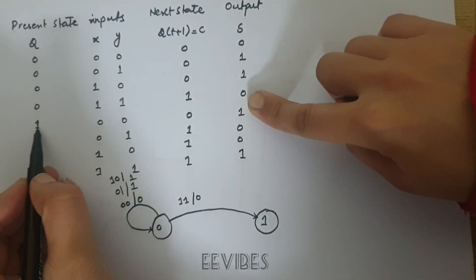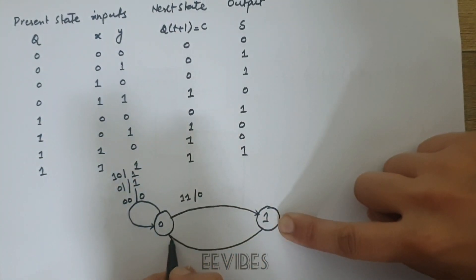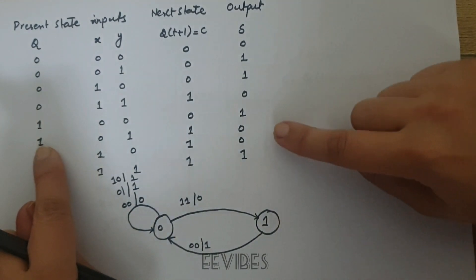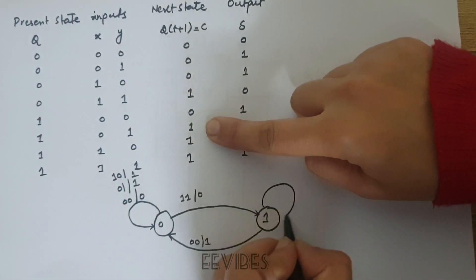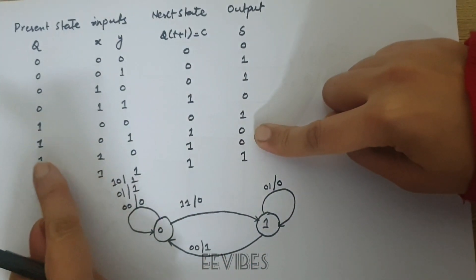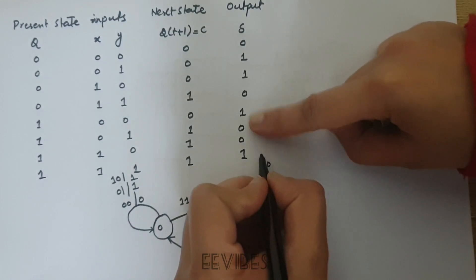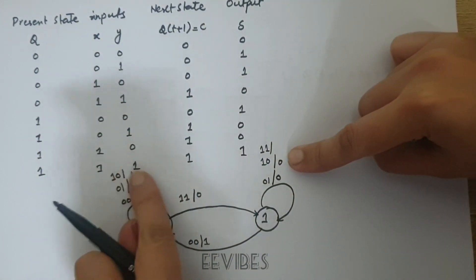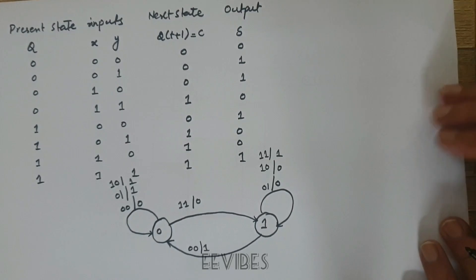In state 1, for input 00, the circuit moves to state 0 with output 1. For input 01, it loops back to state 1 with output 0. For input 10, it stays in state 1 with output 0. For input 11, it loops in state 1 with output 1. This completes the state diagram for this sequential circuit.